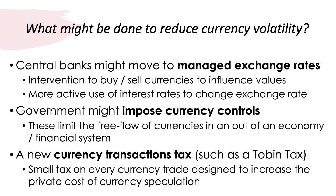Central banks can also use interest rates actively to change the exchange rate and attract hot money flows. The second approach is to impose capital controls — limiting the free flow of currencies in and out of the economy and financial system. Many countries still use capital controls, often more comfortable allowing money in than out. Third, some propose a currency transactions tax, known as the Tobin tax — a very small tax on every currency trade. Since most currency trades are speculative, this raises the private cost of speculation, potentially limiting speculative volumes and raising significant tax revenues.